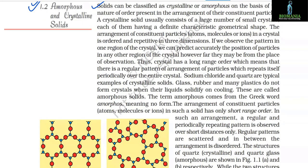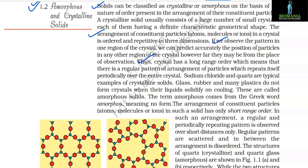1.2 Amorphous and Crystalline Solids. Solids can be classified as crystalline or amorphous based on the nature of order in the arrangement of constituent particles. A crystalline solid consists of a large number of small crystals, each having a definite characteristic geometrical shape. The arrangement of constituent particles in a crystal is ordered and repeats in three dimensions — this is called long range order. Sodium chloride and quartz are typical examples of crystalline solids.